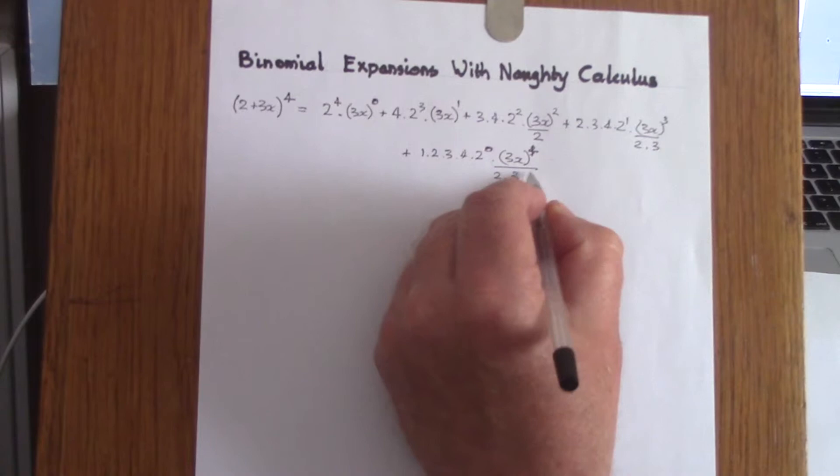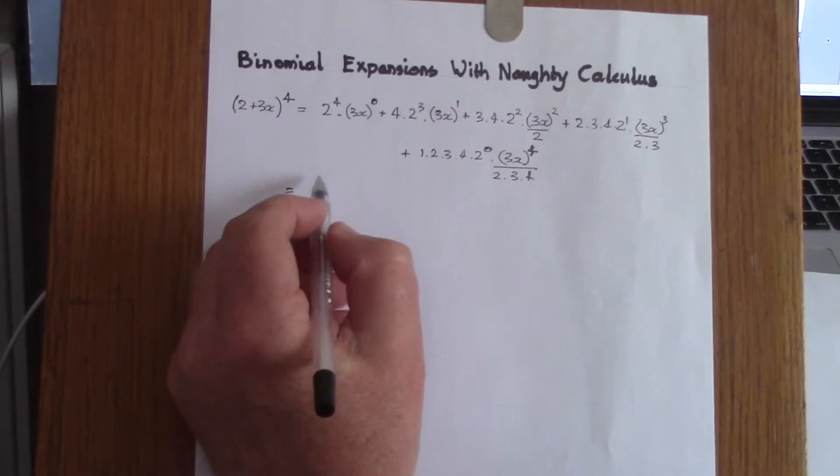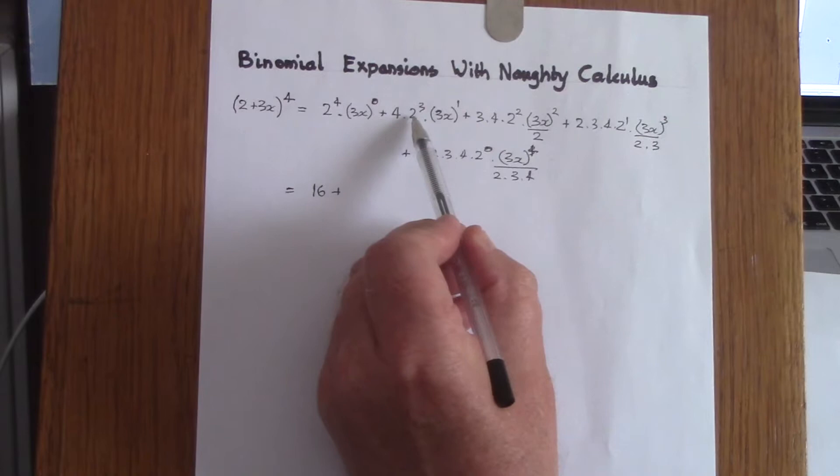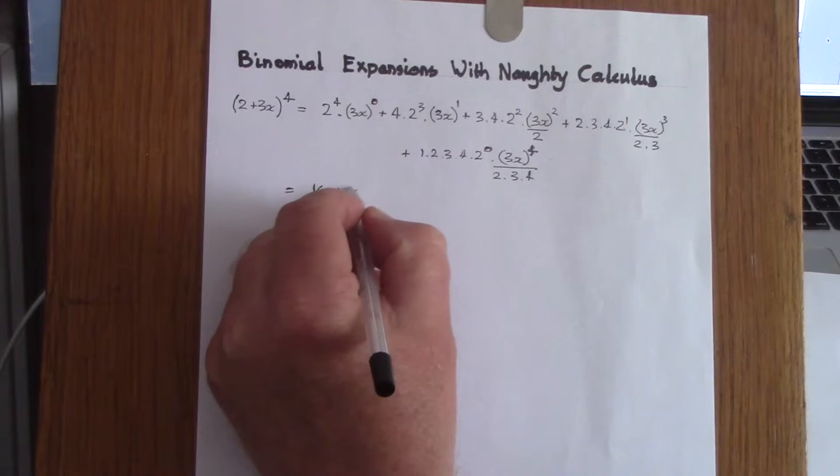Now all that's left is to simplify. The first term is 1 times 2 to the power of 4, which is 16. Next, 3x to the power of 1 is 16 — plus we've got 8 times 4 which is 32, times 3 which gives 96x.